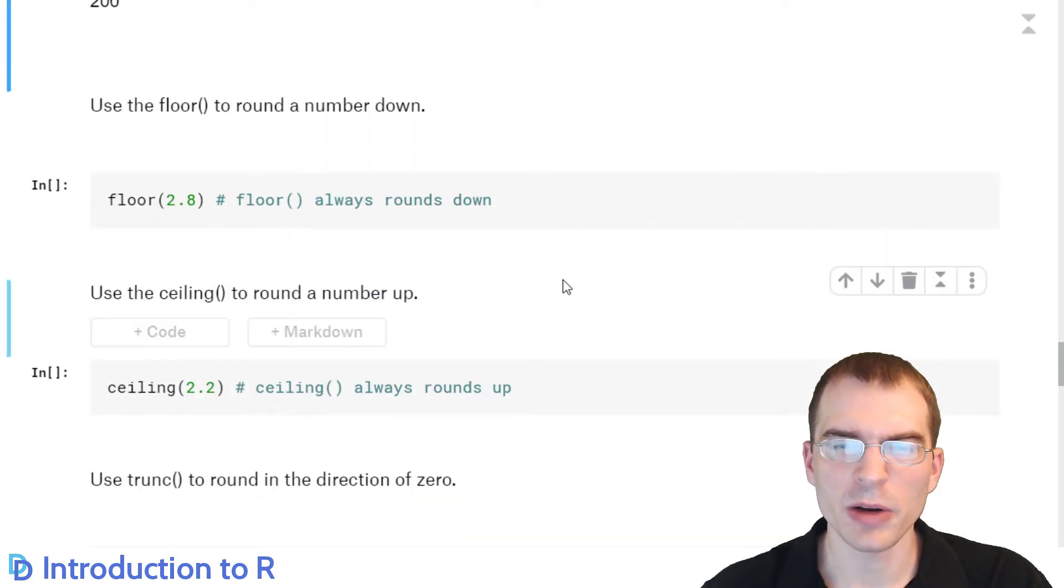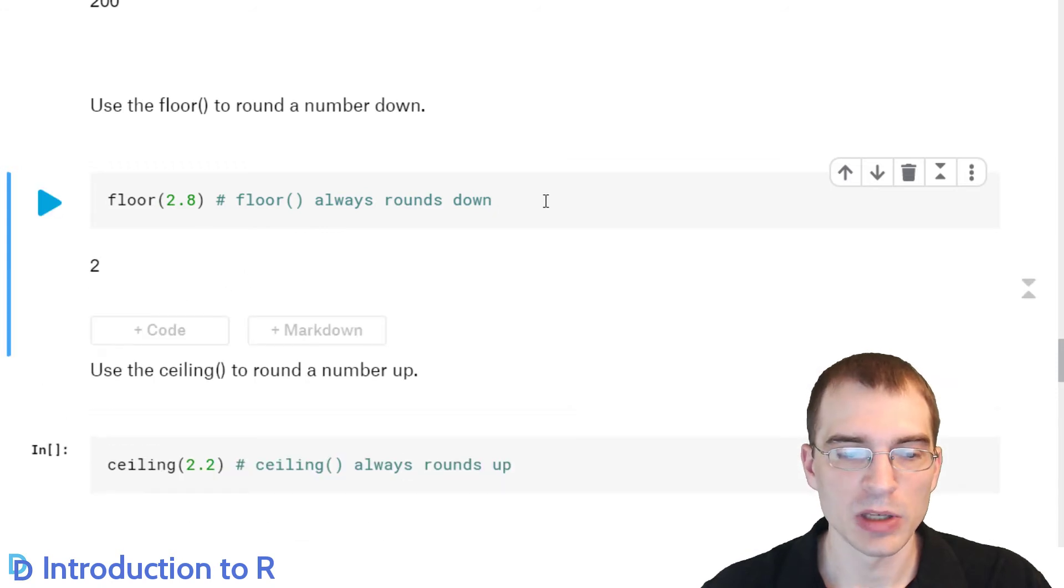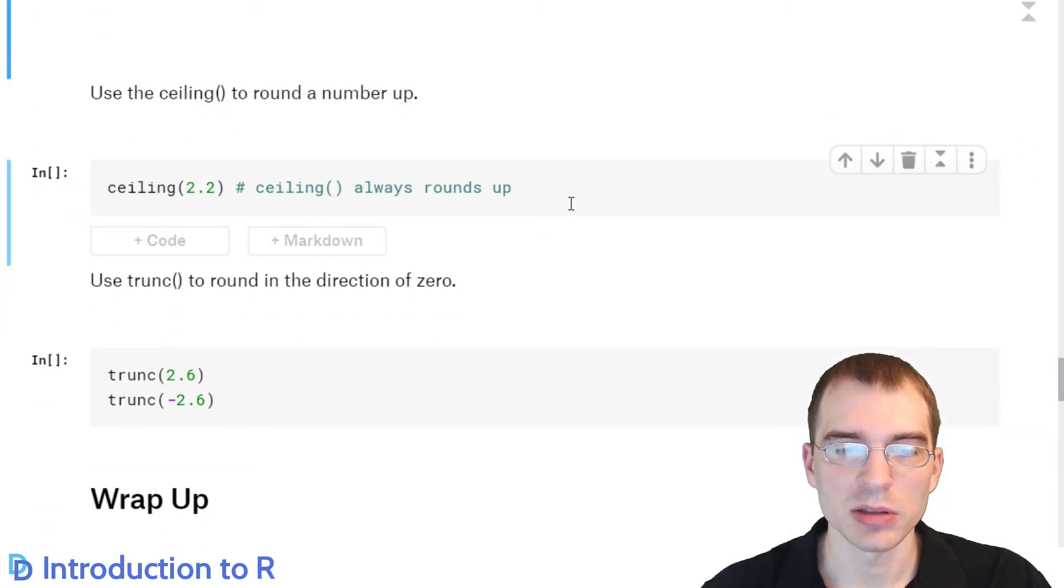And there are a few different rounding operations. The normal round function rounds up or down to the nearest value. But you can use floor if you always want to round down. So in this case, we're passing in 2.8 to floor. And even though that's closer to 3, floor always rounds down. So this is going to become 2 when we run this. And the opposite of floor is ceiling. So ceiling will always round up to the next whole number. So in this case, 2.2 you would think should round down to 2, but with ceiling, it rounds up to 3.